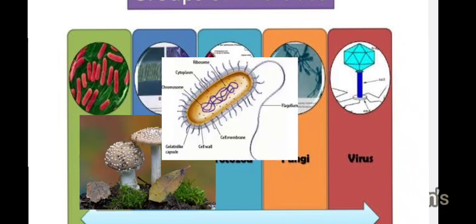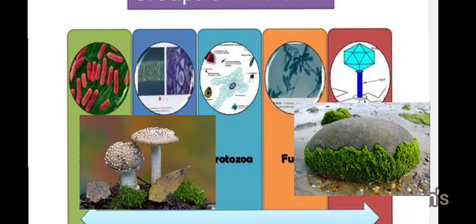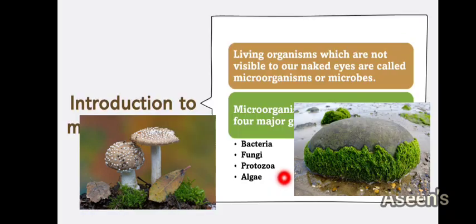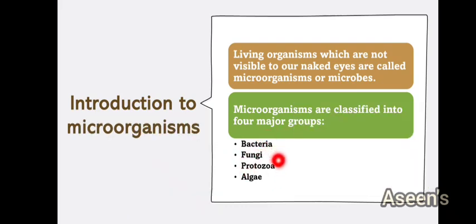Microorganisms are of many types, so they are classified into four major groups: bacteria, fungi, protozoa, and algae. Some of these might be familiar to you, and some might be something you are going through for the first time.